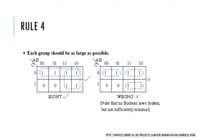Rule number four: each group should be as large as possible. Looking at the second Karnaugh map with six ones, you might form three groups of 2, which satisfies previous rules. However, rule 4 says we must maximize group size. Here, we can form a group of 4 with these four cells, and another group of 4 with those four cells — giving us 2 groups of size 4 instead of 3 groups of size 2. The larger grouping is correct.